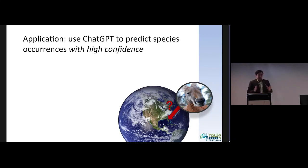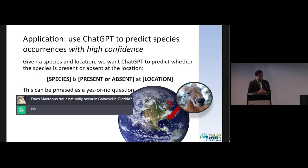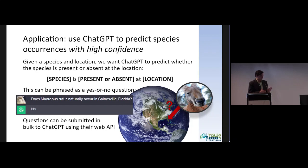Our specific application is to use ChatGPT to predict species occurrences with high confidence. More precisely, given a species and location, we want ChatGPT to say whether the species is present or absent at that location. This can be phrased as a yes or no question — for example, does Macropus rufus naturally occur in Gainesville, Florida? Thankfully it said no. To make this actionable at larger scale, instead of typing questions into ChatGPT manually, we use their web API.